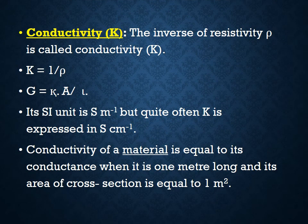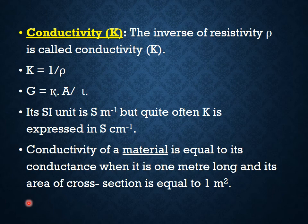Conductivity K: the inverse of resistivity rho is called conductivity. K is equal to 1 by rho. We can also represent conductivity in terms of conductance: G is equal to K times A by L. The SI unit of conductivity is S per meter, but quite often conductivity K is expressed in S per centimeter.